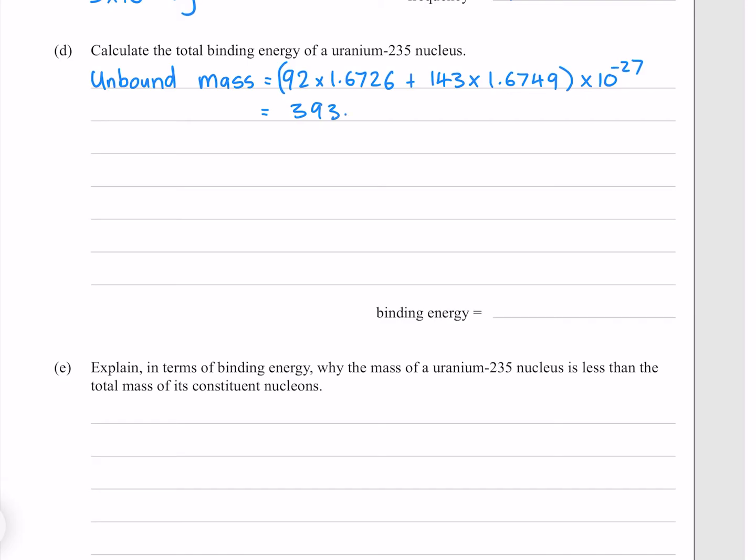Which gives me 393.3899 times 10 to the minus 27 kilogram. And we know that our bound mass is the 390.2182 times 10 to the minus 27 kilogram that we're given earlier.